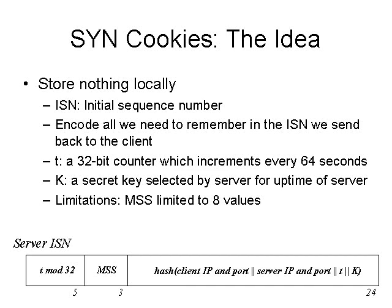We're going to use only three bits for the MSS, so we'll only have eight values available. The initial sequence number the server generates takes the lowest five bits of the counter T as the first and most significant bits of the ISN, then puts in the MSS, and then the last 24 bits are a hash of the client IP and port, server IP and port, the full 32-bit time counter T, and the secret key K — all hashed together into 24 bits.